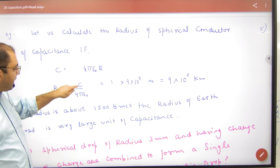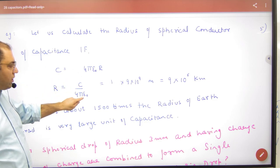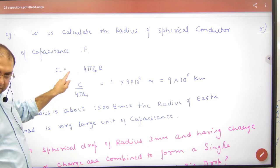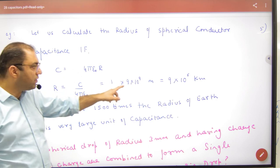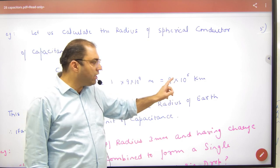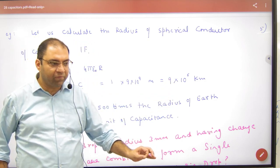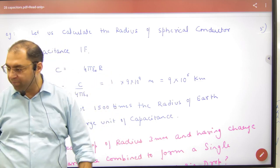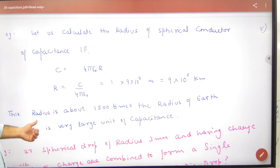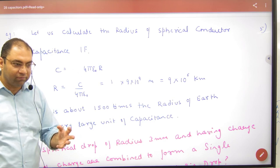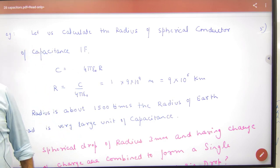If the capacity is one farad, then the radius will be 9 into 10 to the power of 9, which is 9 into 10 to the power of 6 kilometers. That's about 1500 times the Earth's size.